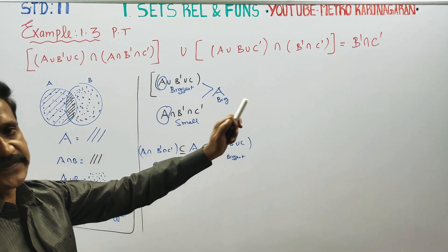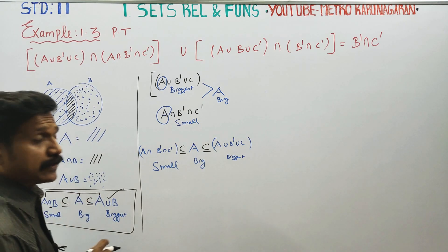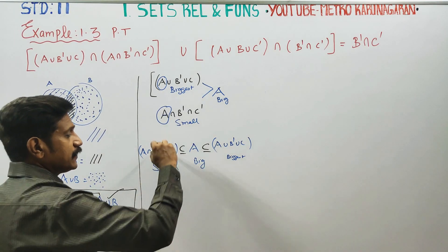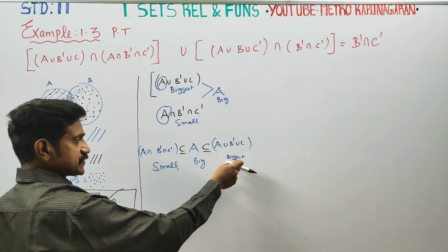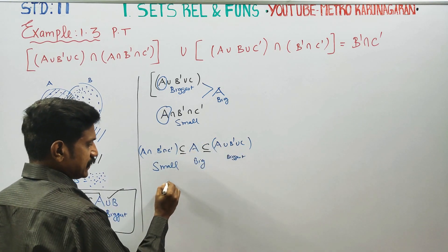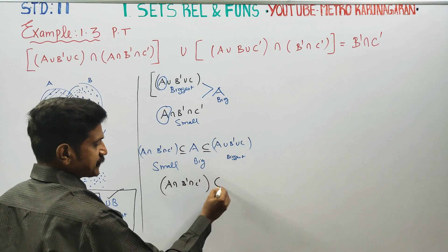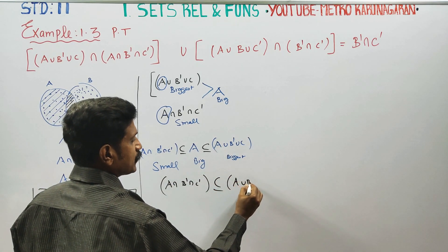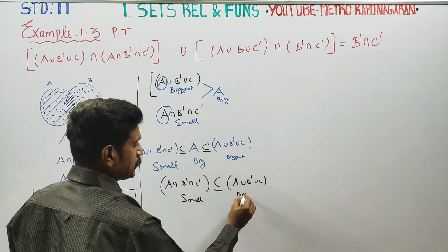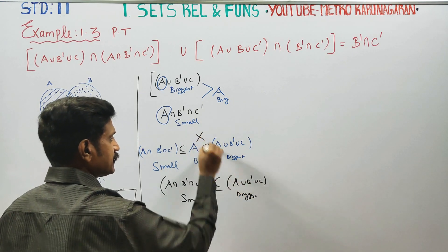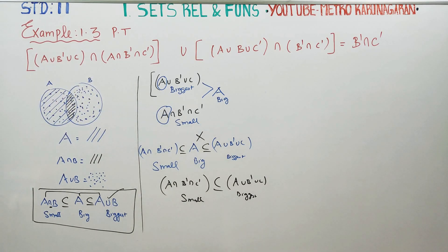This is the subset of this, and this is the subset of this. We are proving that A intersection B' intersection C' is a subset of A union B' union C'. This is the biggest. We are going to compare two pairs.